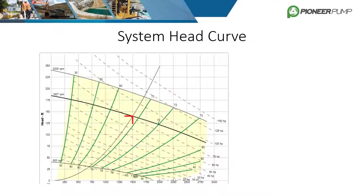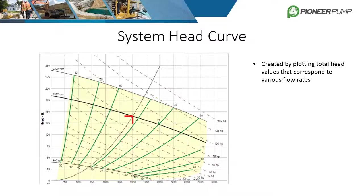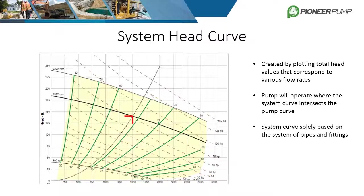The image shown is a typical pump curve describing how a pump will perform at various speeds and pressures. The positive sloping curve represents the system curve, created by calculating total dynamic head at various flow rates and plotting those points. This makes sense because as flow increases, friction losses increase, causing total head to go up. In a given system, the pump will operate where the system curve intersects the pump curve. For example, when the pump is running at 1,927 RPM, flow will be 1,500 gallons per minute and total head will be about 140 feet.